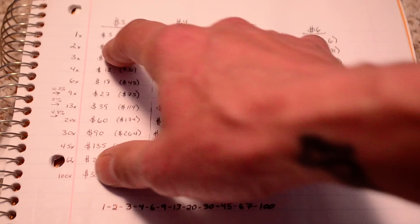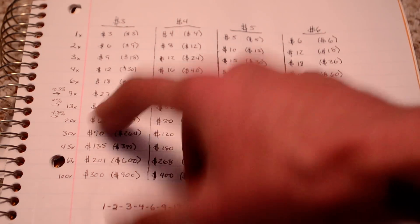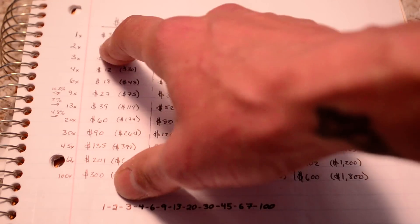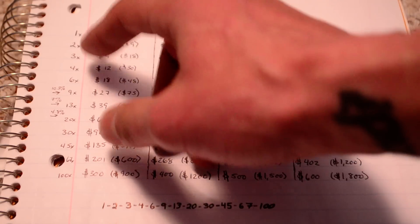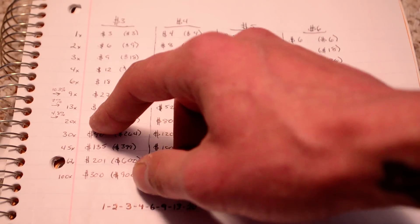So every time you lose though, you just move your bet up, so that way, the probabilities of missing that dozen, every time you go down, the probabilities are lower and lower and lower.